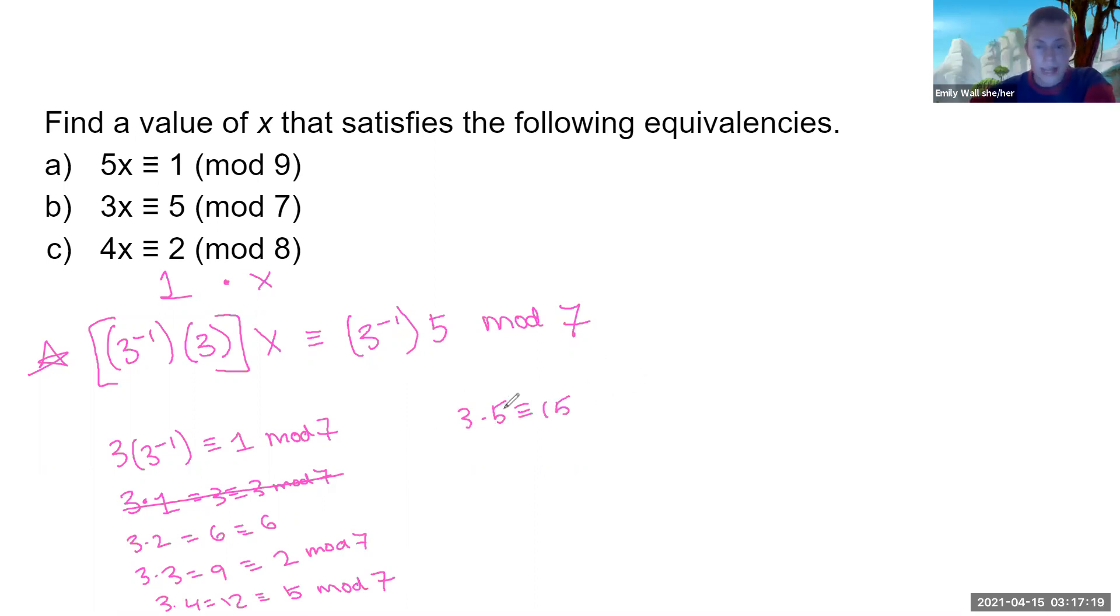Okay. Trying the next inverse. 3 times 5 equals 15, which is equivalent to 1 mod 7. Look at that. 14 plus 1 is 15. Heck yeah. So we have found 3's inverse. It is 5.